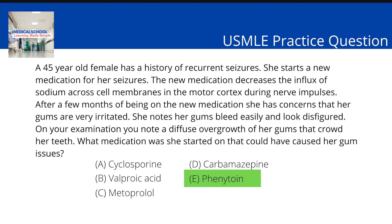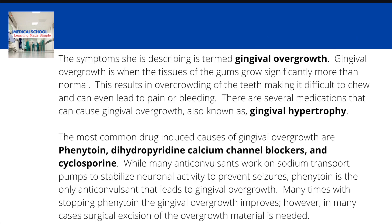The symptom she's describing is termed gingival overgrowth. Gingival overgrowth is when the tissues of the gums grow significantly more than normal. This results in overcrowding the teeth, making it difficult to chew, and can even lead to pain or bleeding. There are several medications that can cause gingival overgrowth, also known as gingival hypertrophy.